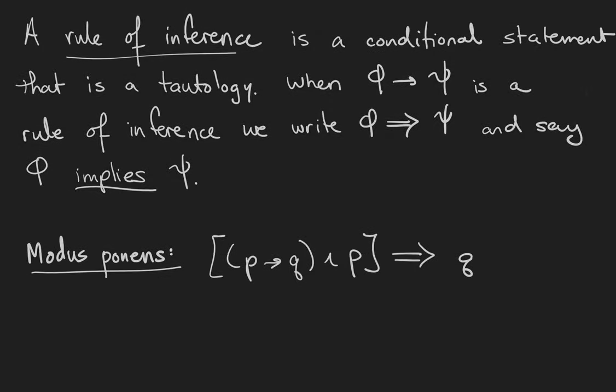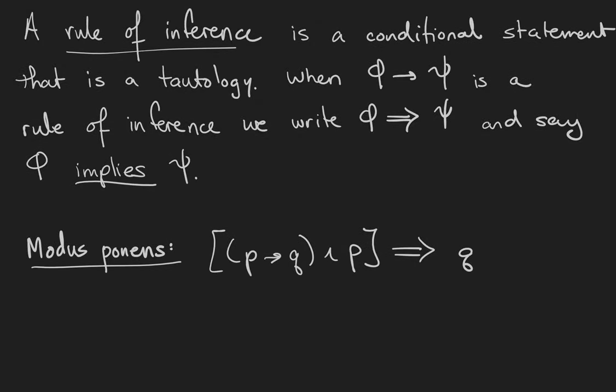A rule of inference is a conditional statement that is a tautology, in other words, always true. When phi implies psi is a rule of inference, we write phi and then this kind of stronger arrow, psi, and say that phi implies psi.